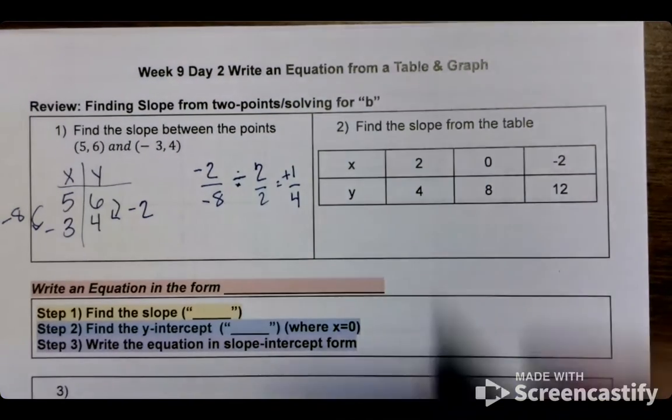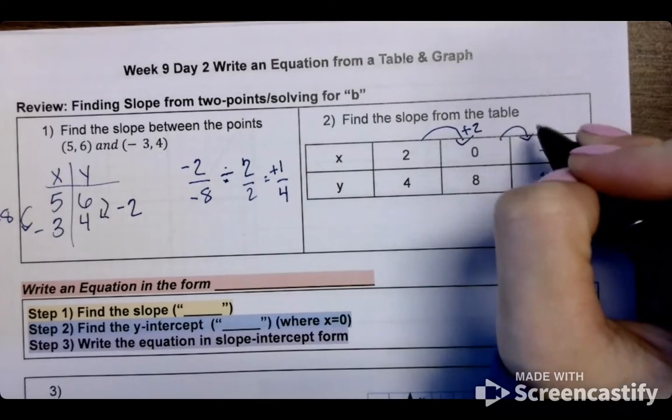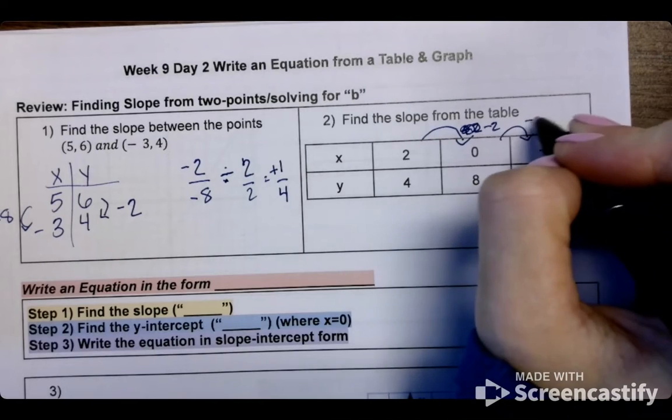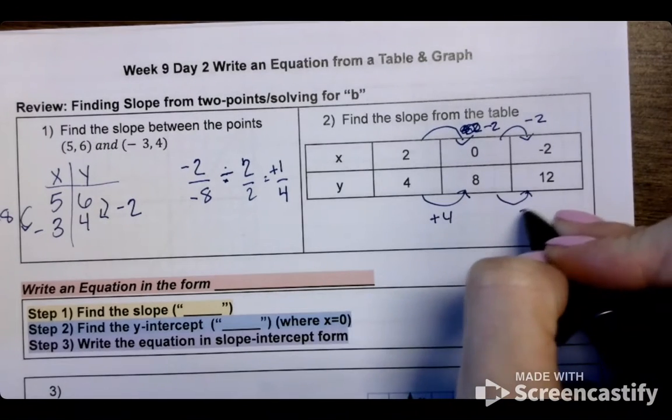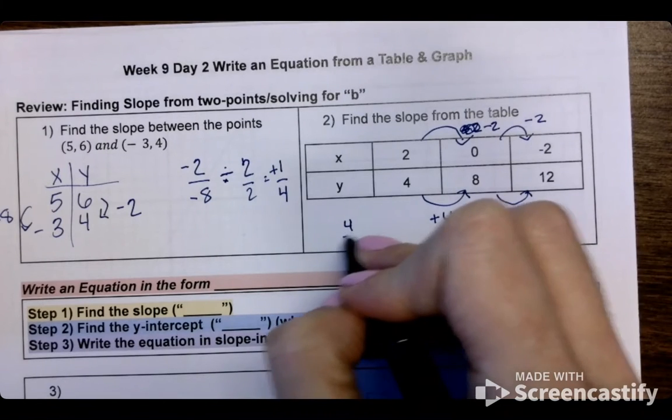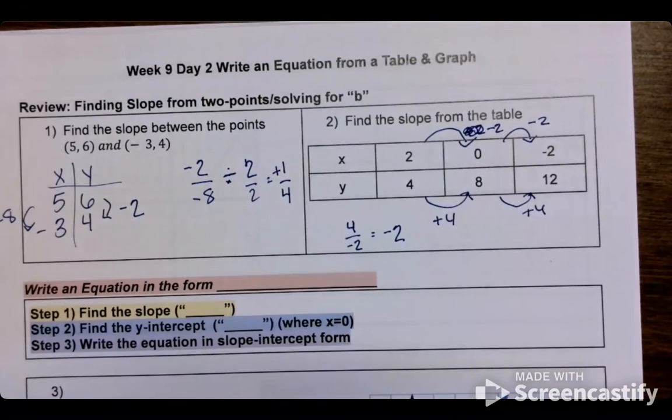For the second one, you should have said that you are going up 2 here. I'm sorry, you're going down 2 here. And you are going up 4 here. So that's 4 over negative 2, which if you plug that into Desmos is negative 2.